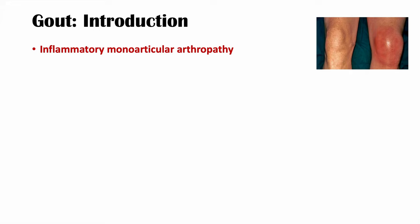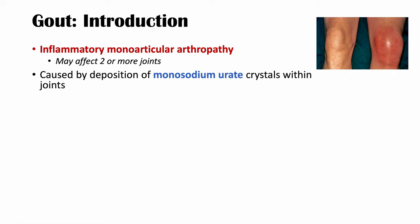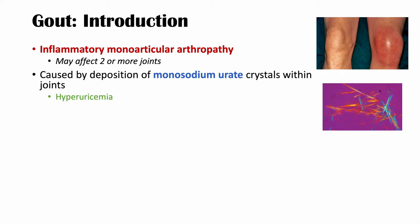Gout is an inflammatory monoarticular arthropathy. It involves inflammation, and monoarticular means it involves only one joint — it's a disease of a joint. So it is an inflammatory disease of usually one joint, though two or more joints can be affected. It's caused by a deposition of monosodium urate crystals within joints, making it a crystal arthropathy. This buildup is ultimately due to a state of hyperuricemia — a high level of uric acid in the blood.